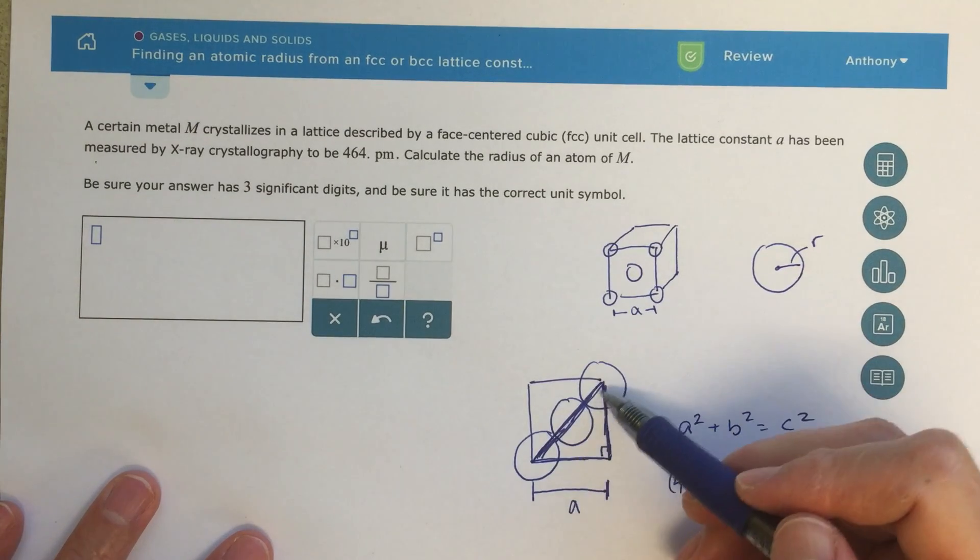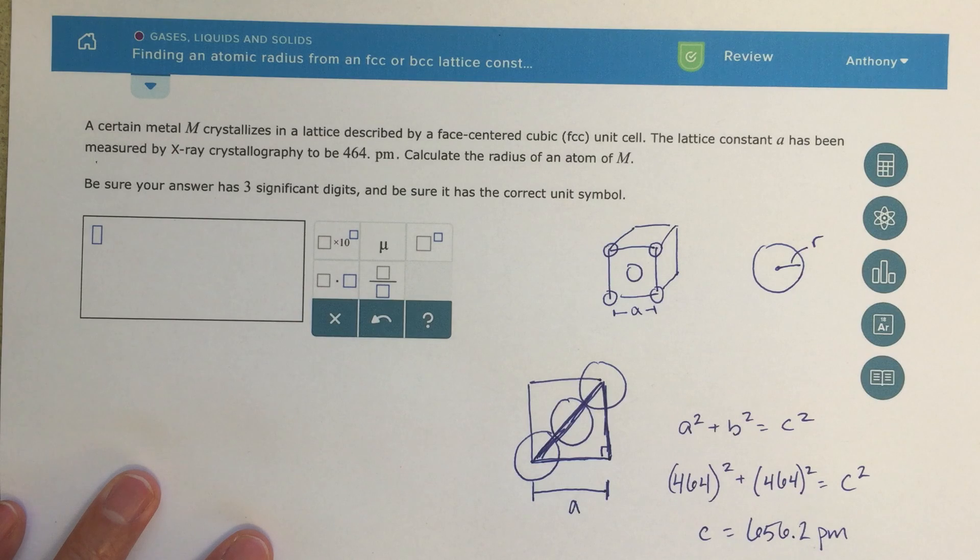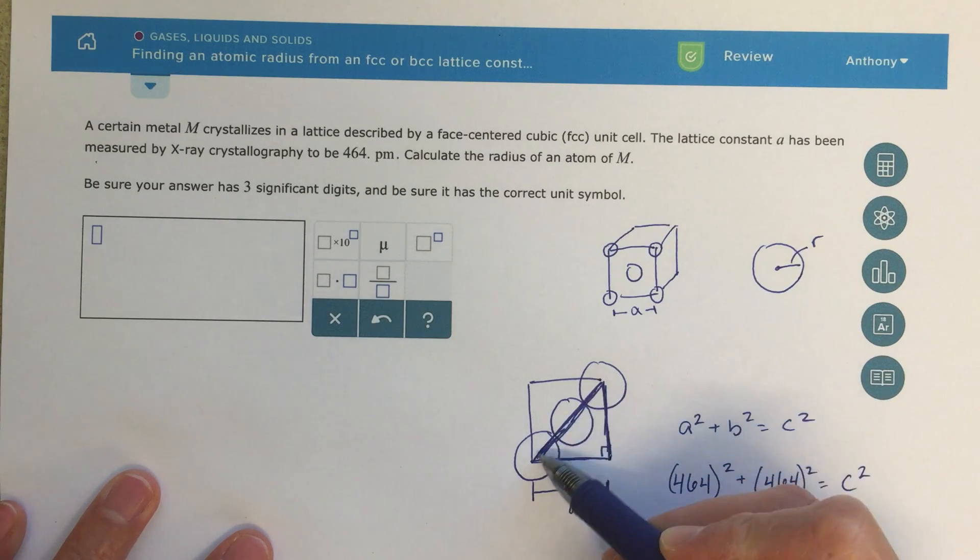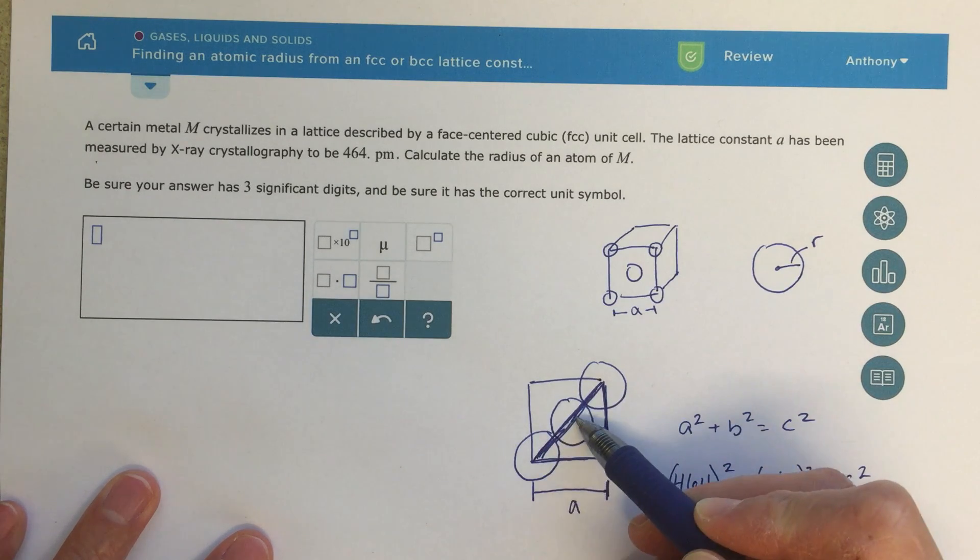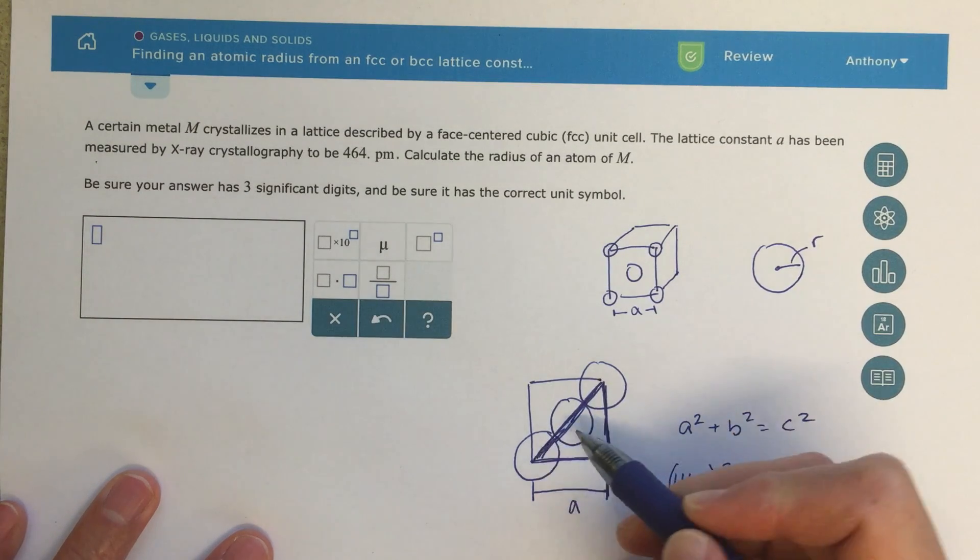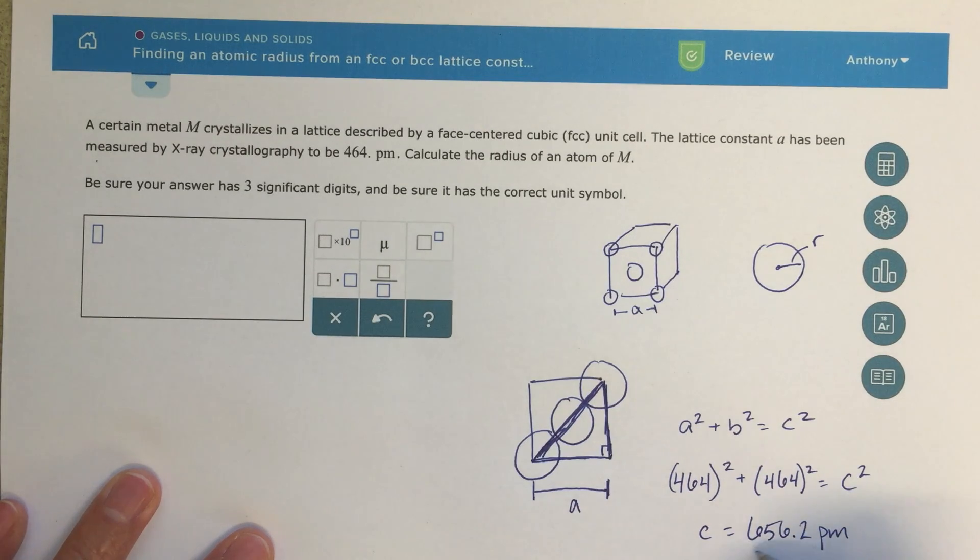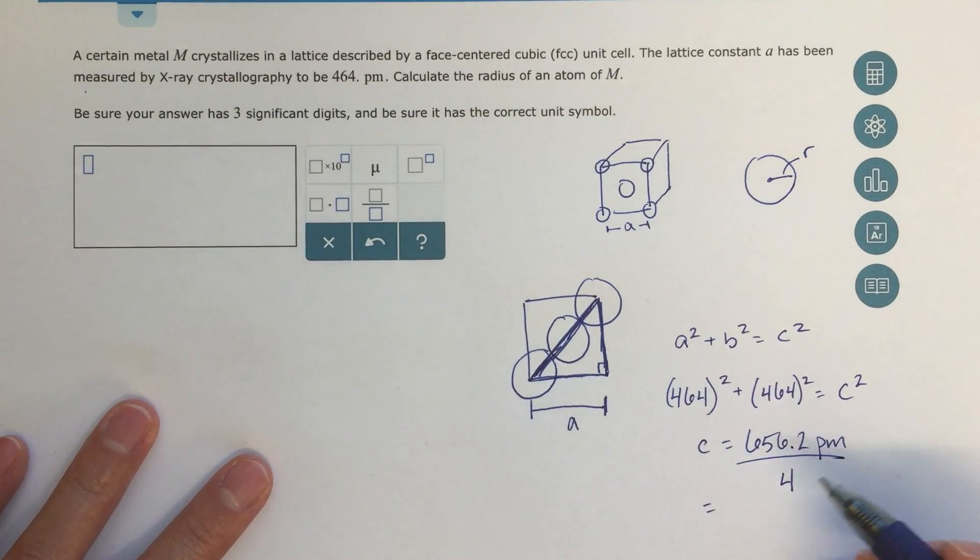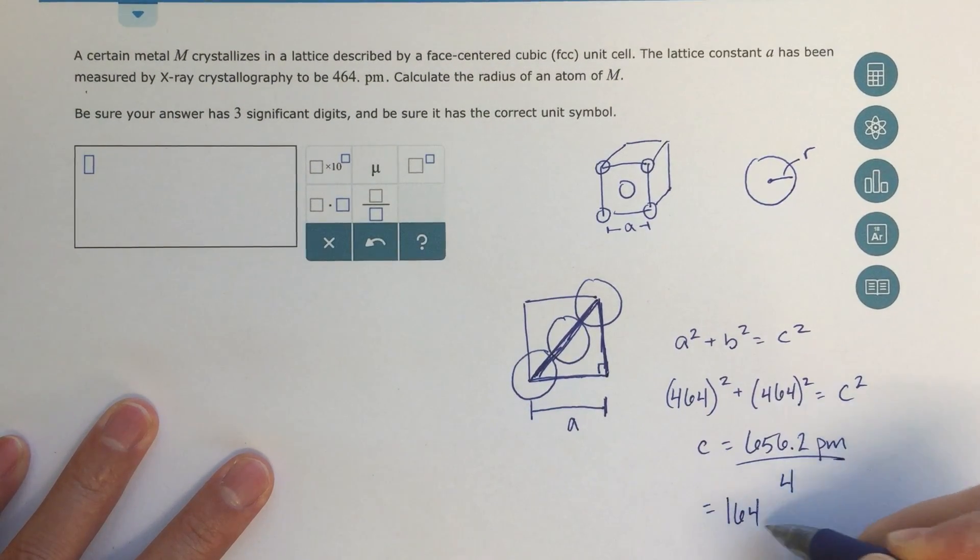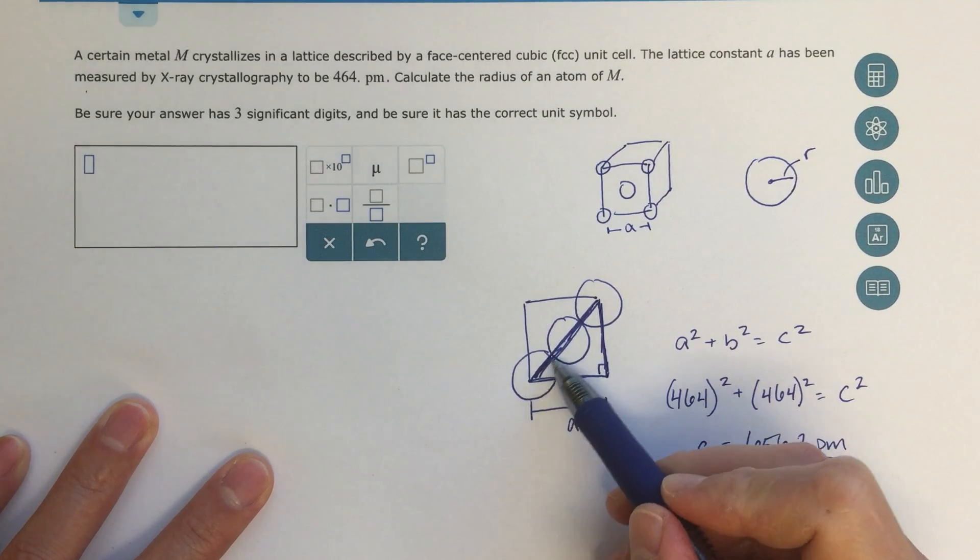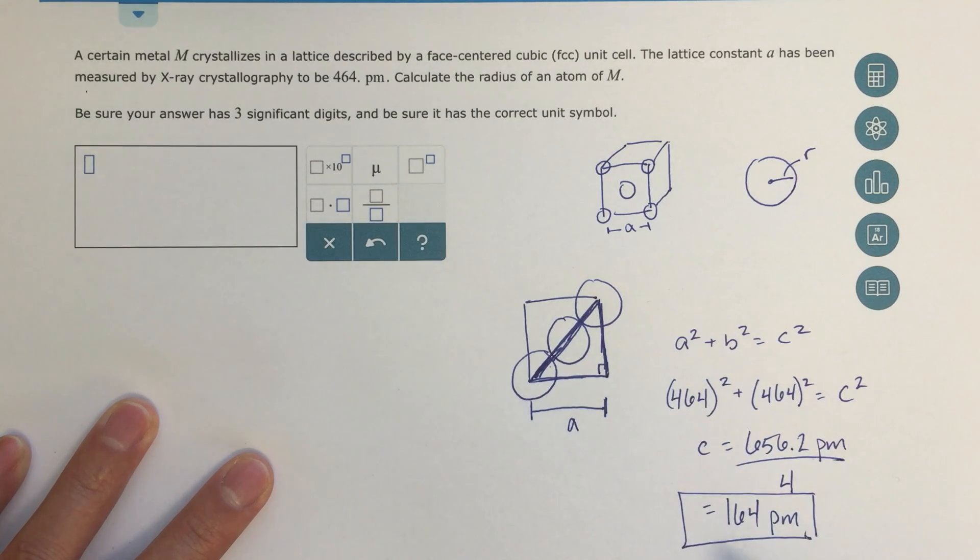That distance is 656.2 picometers. I'm staying in picometers since this was given in picometers. That tells me this distance is 656.2 picometers. Now I need to figure out what is the radius here. We've got four radii here: one, two, three, four. If I divide this by four, that's going to tell me the distance for one of these pieces. 656.2 divided by four equals 164 picometers, and that equals my radius.